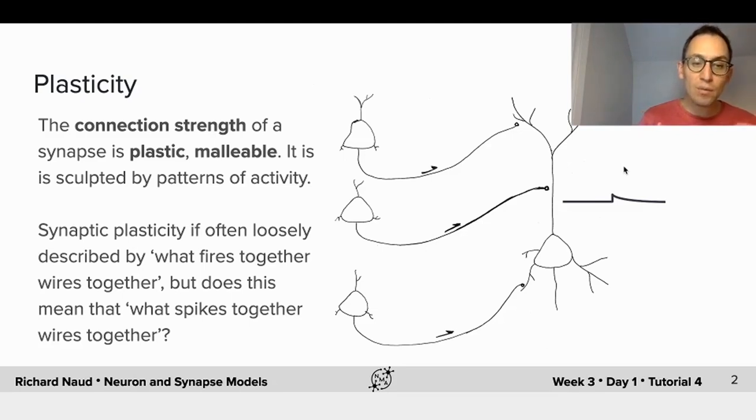But does that mean what spikes together, wires together? How is plasticity orchestrated when the communication is based on spikes, with precise timing?